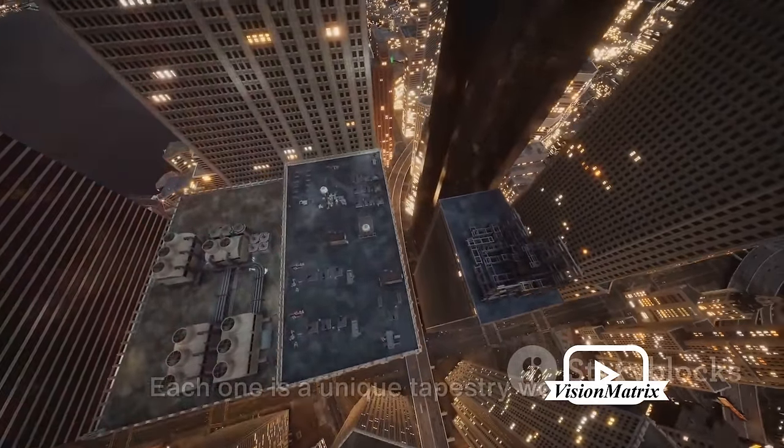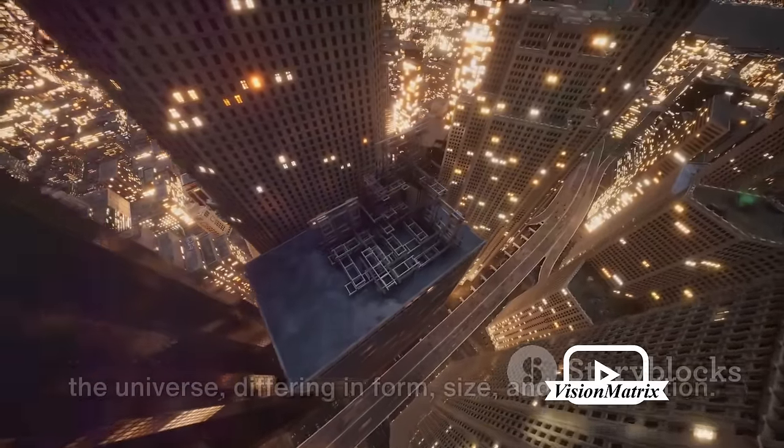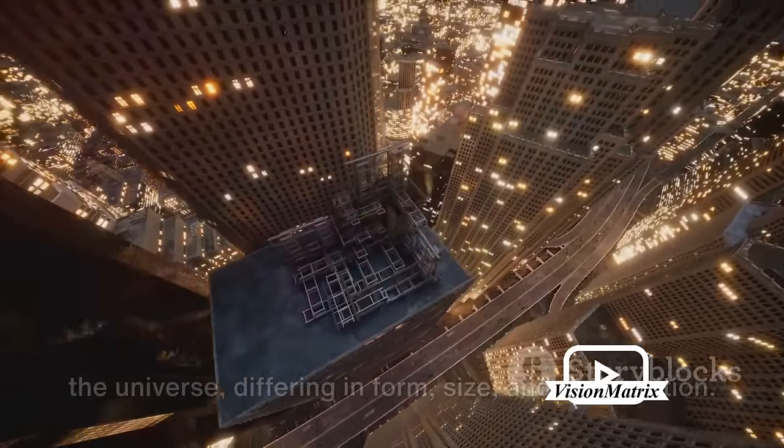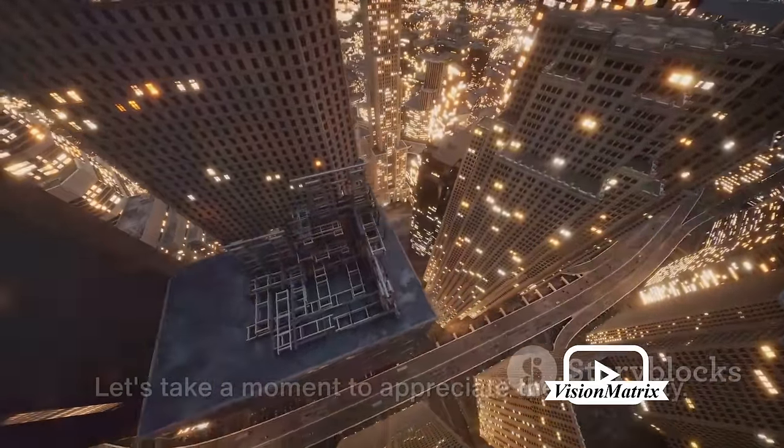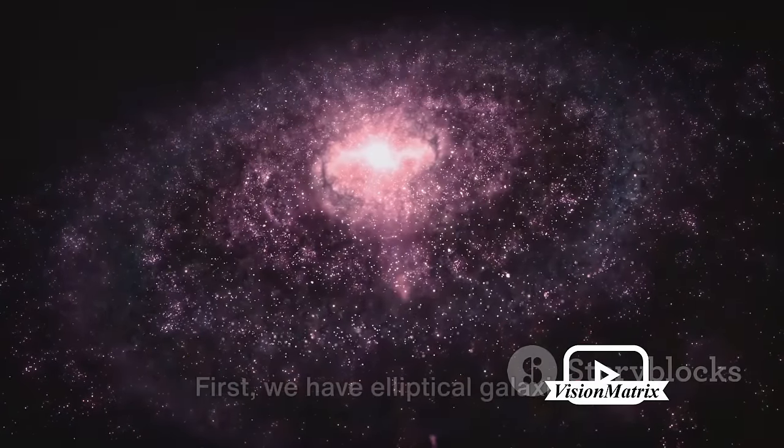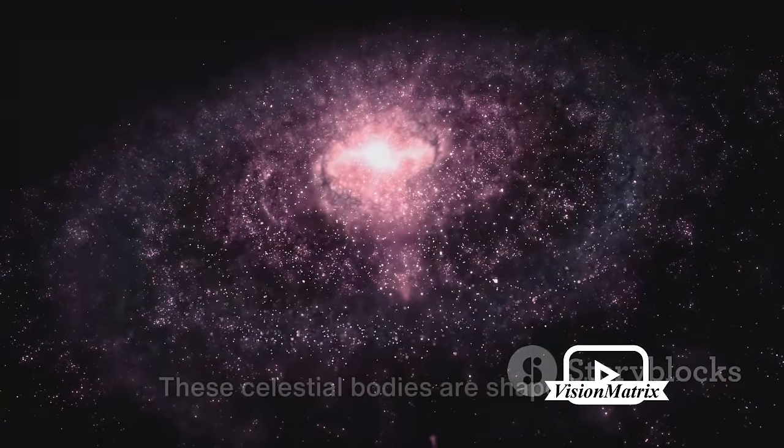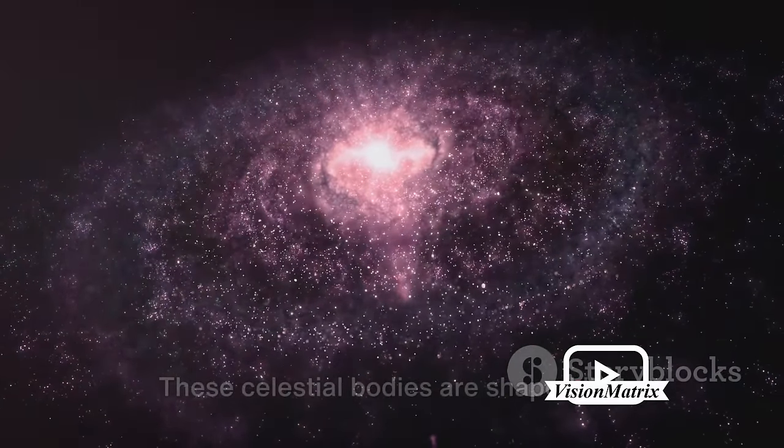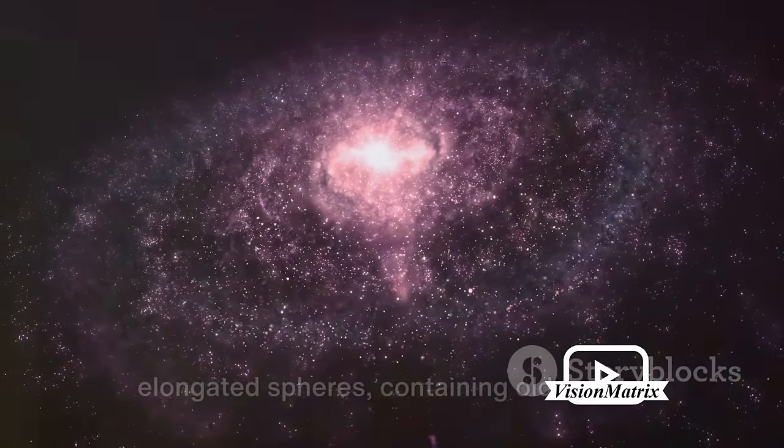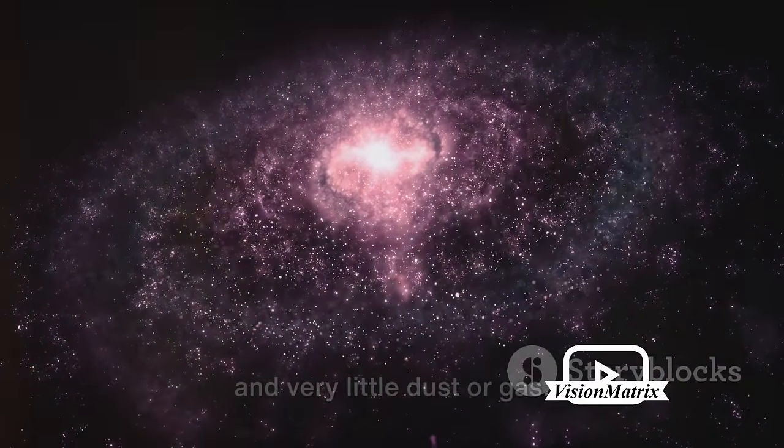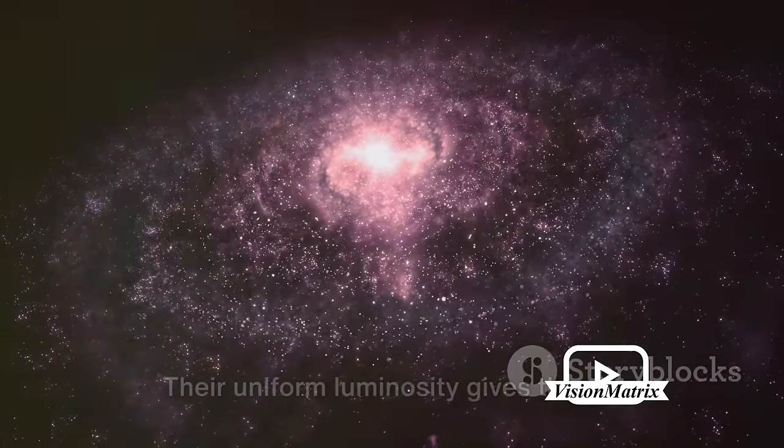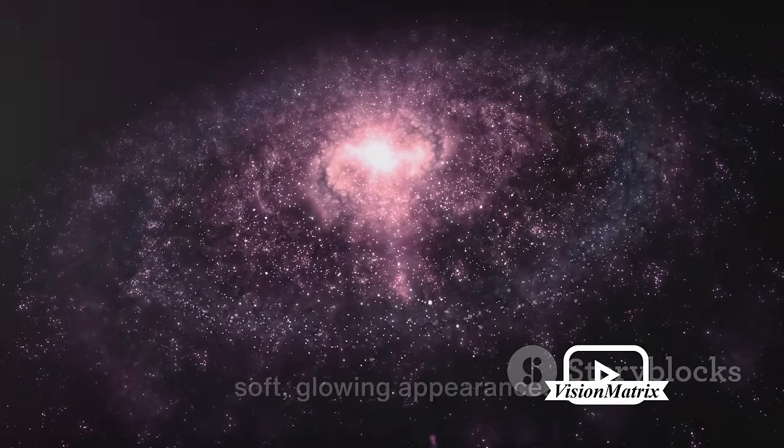Each one is a unique tapestry woven by the universe, differing in form, size and composition. Let's take a moment to appreciate their diversity. First, we have elliptical galaxies. These celestial bodies are shaped like elongated spheres containing older stars and very little dust or gas. Their uniform luminosity gives them a soft, glowing appearance.